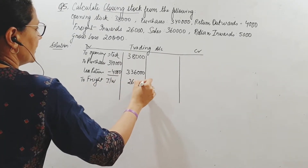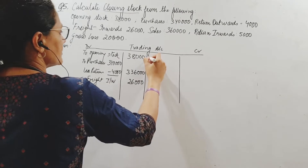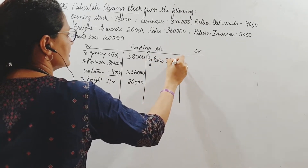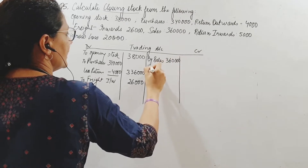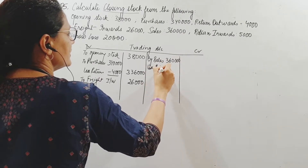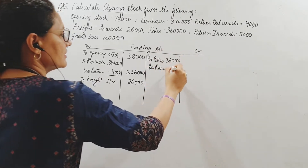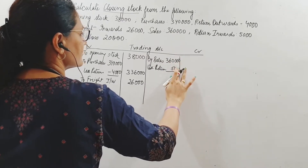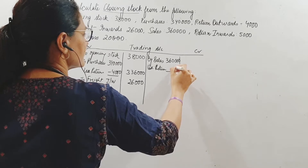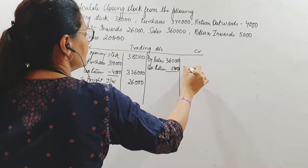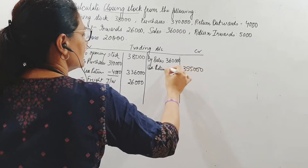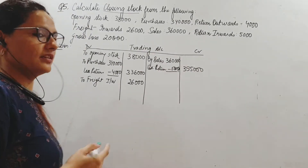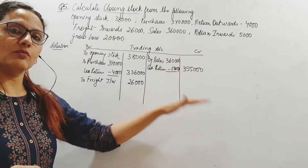Then we have sales. Sales is my income, I put it here: 3,60,000 minus sales return of 5,000, so net sales is 3,55,000.